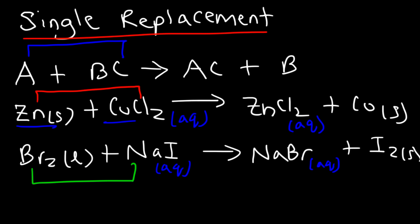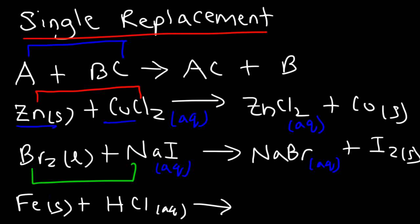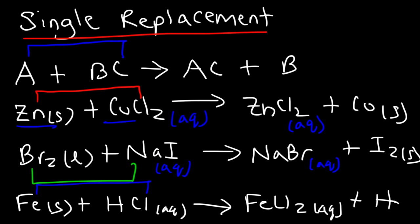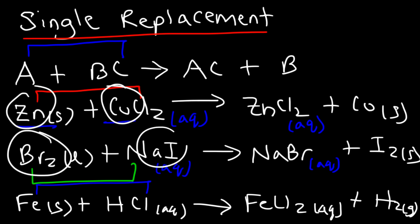Iodine (I2) is a solid at room temperature. Sometimes a metal can replace a non-metal — in this case, hydrogen. For example, iron (Fe) can displace the hydrogen in hydrochloric acid. Fe pairs up with Cl to form FeCl2 in aqueous state, displacing hydrogen gas. This is one of those rare cases where a metal displaces a non-metal. For the most part, metals tend to replace metals and non-metals tend to displace other non-metals.